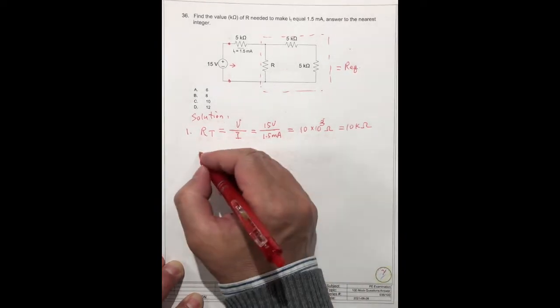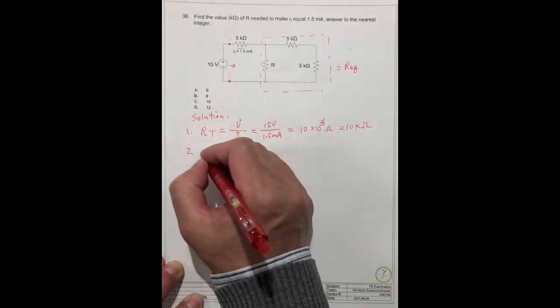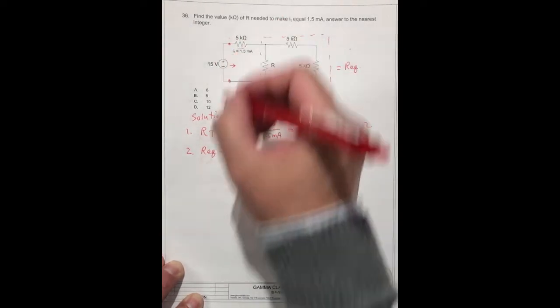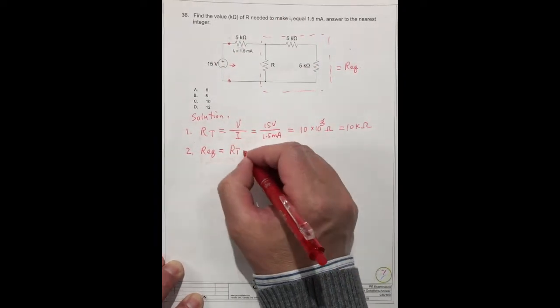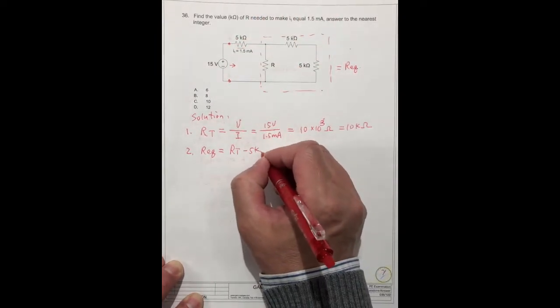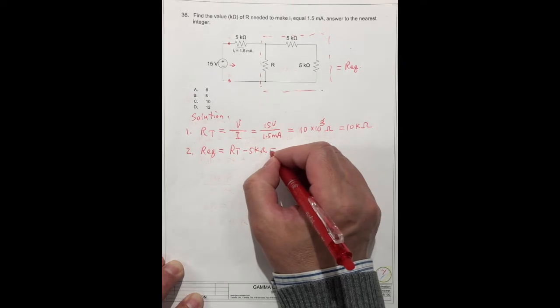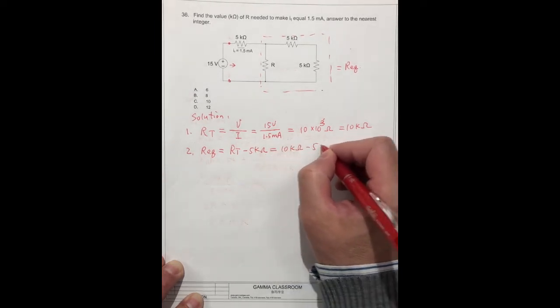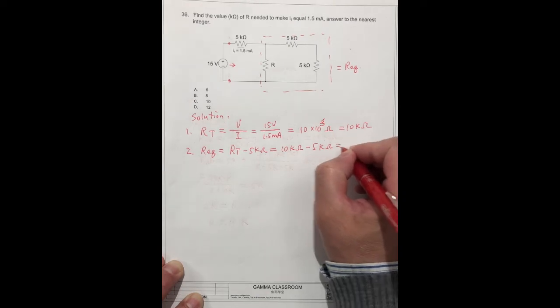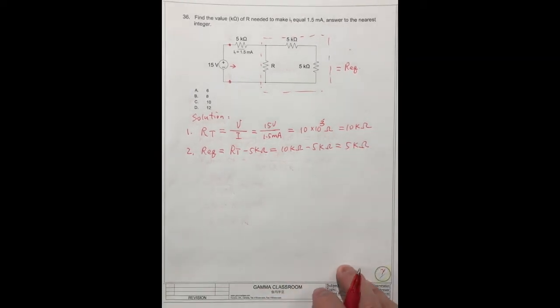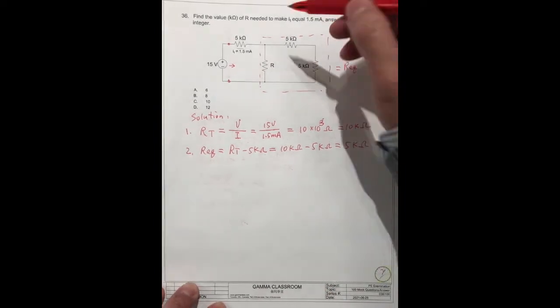So second one, R equivalent is equal to the total resistor minus this part, 5 kilo-ohms. So this is equal to 10 kilo-ohms minus 5 kilo-ohms, is equal to 5 kilo-ohms. So when you see this part,